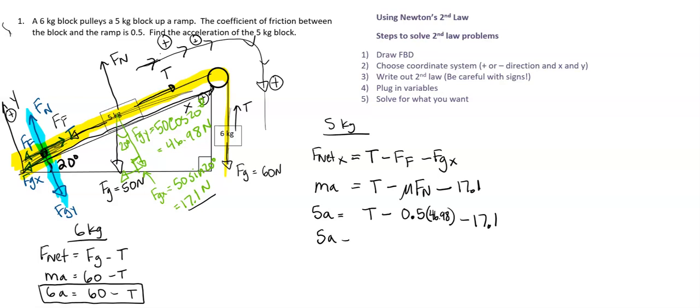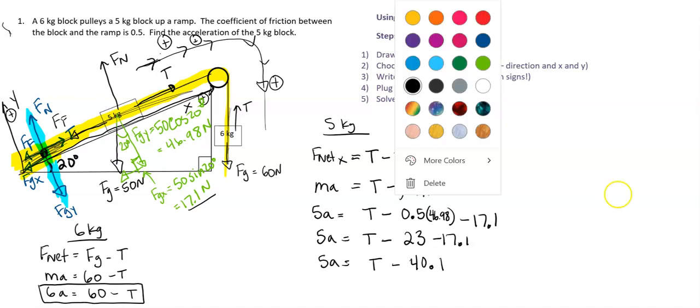So let's simplify this a little. So we have 5A equals T minus, this is about 23, minus 17.1. Let's simplify that a little. So it's 5A equals T minus, what is that? 40 point, yeah, is that right? 40.1. Okay. I apologize.